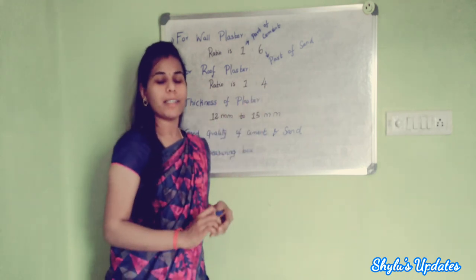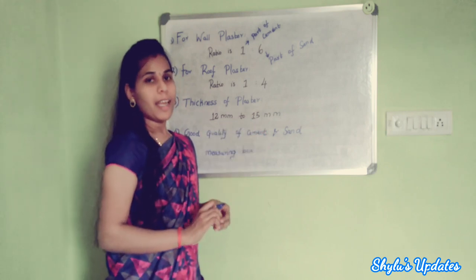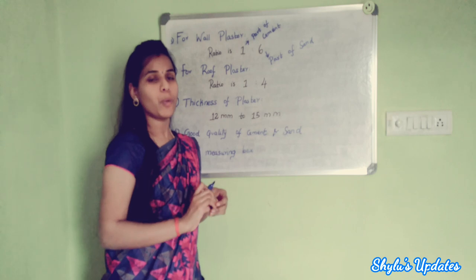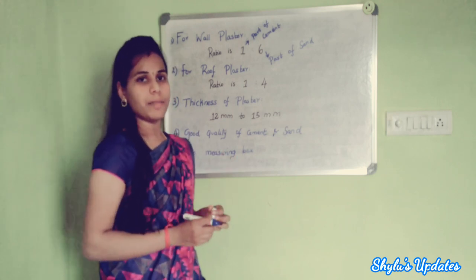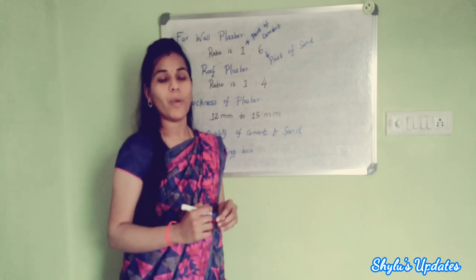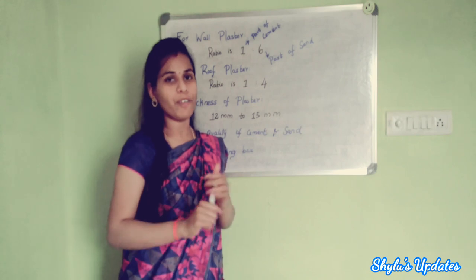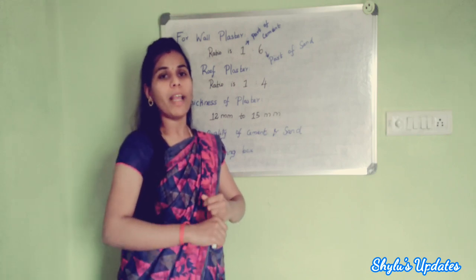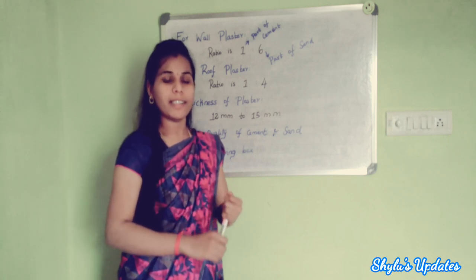The third point is: thickness of plaster should be between 12 mm to 15 mm. The fourth point is: use good quality of cement and sand. The fifth point is: while measuring the quantity of plaster on site, you have to take the materials in the measuring box and measure. These are all 5 points to remember.